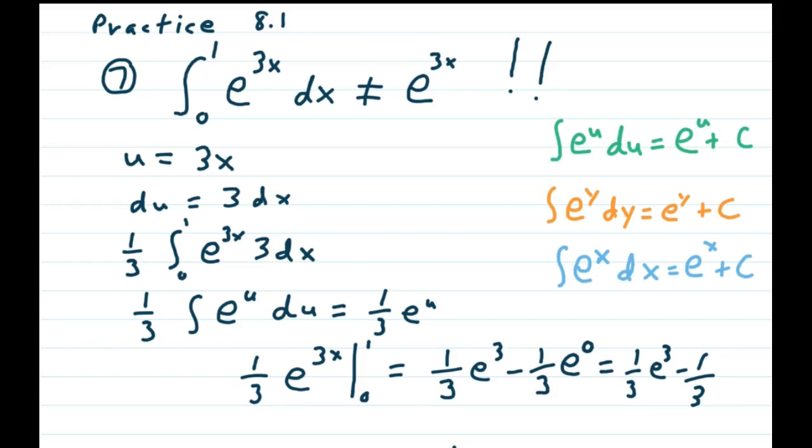Evaluated from 0 to 1, so that turns into (1/3)e^3 minus (1/3)e^0. Now remember that e^0 = 1, so our final answer is (1/3)e^3 - 1/3.